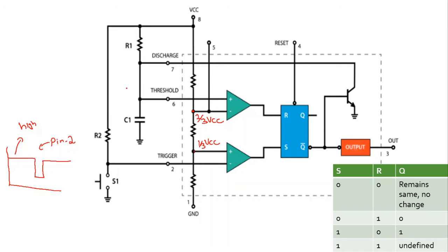Now let us understand the working of the 555 timer as a monostable multivibrator. Pin 6 and pin 7 are connected together. Resistor R1 is connected between VCC (pin 8) and pin 6/7. Capacitor C1 is connected between pin 6/7 and ground. The reset pin is connected to VCC since it is active low, and pin 5 is connected to a 0.01 microfarad capacitor to ground.